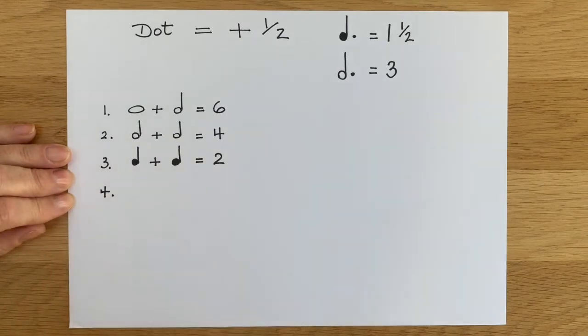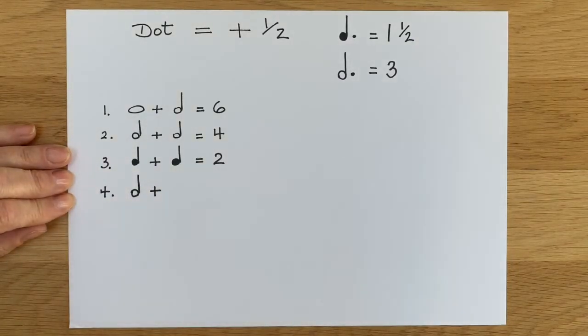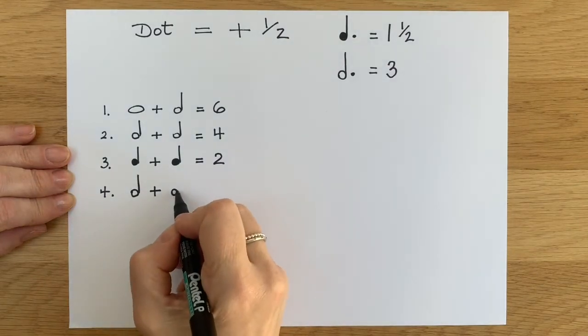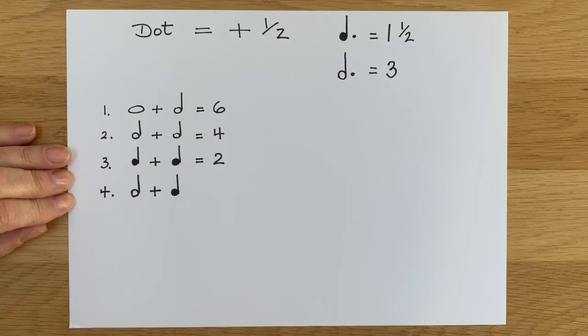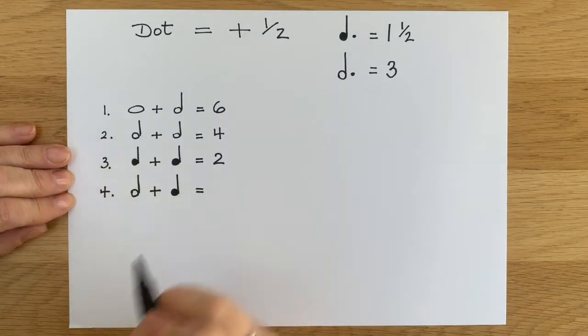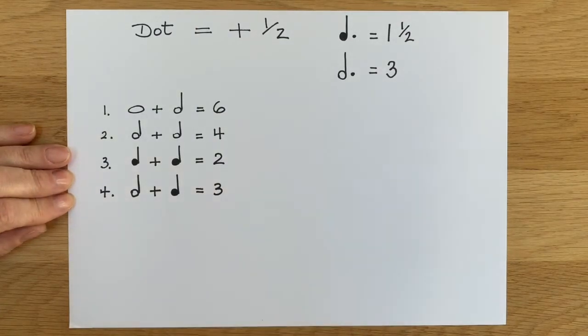So, number four. The first note is a minim. And that minim is followed by a crotchet. Now, can you do this sum? You've done well so far. So have a think what this is in total. There you go, it's three.